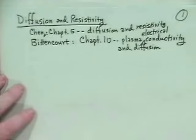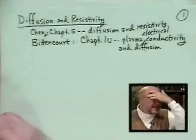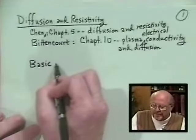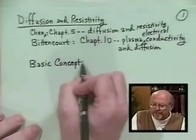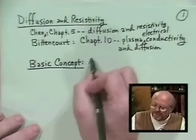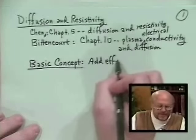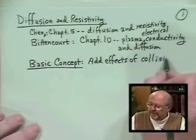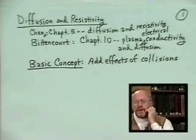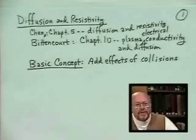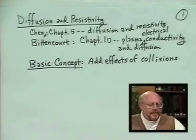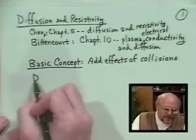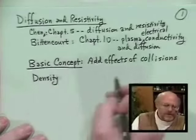The basic concept of this whole chapter is that we want to add collisions — we've been talking about a collisionless plasma, and now we want to add the effects of collisions. The question is where they come in, in the descriptions we've been using: density conservation and momentum conservation.